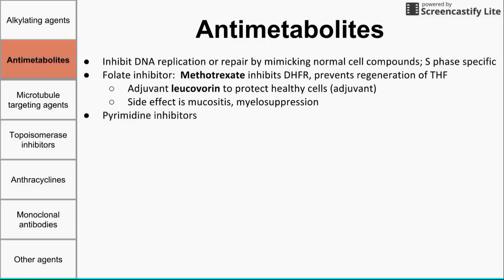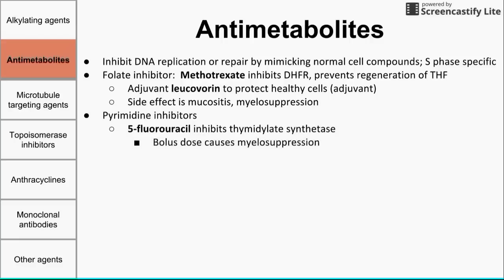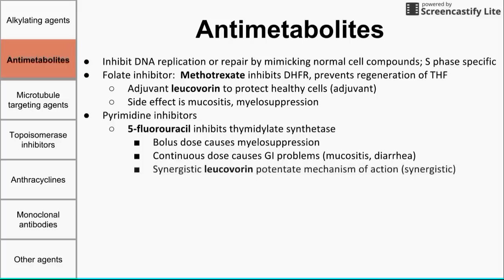The next group of antimetabolites are the pyrimidine inhibitors. The big one is 5-FU, 5-fluorouracil, which inhibits the enzyme thymidylate synthetase. When you administer 5-FU as a bolus, it causes myelosuppression. If you administer it as a continual dose, it causes GI problems like diarrhea and mucositis. You also want to use leucovorin with 5-FU, but for a different reason — here, leucovorin potentiates the mechanism of action of 5-FU rather than protecting healthy cells as it does with methotrexate.